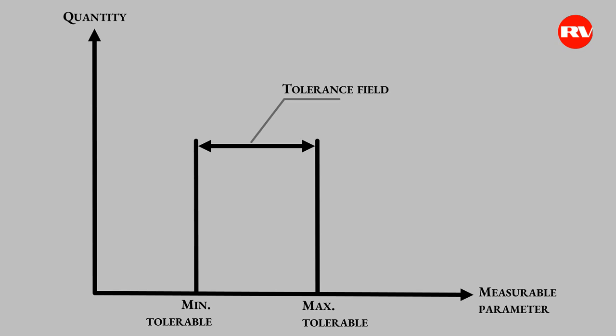Therefore, one must understand that quality is primarily characterized by the measurability of the parameter and the tolerance field — a certain interval between the minimum acceptable value and the maximum acceptable value. If in this interval you choose some more intervals, then you will get a certain sortedness. That which is close to the limits is the third sort; that which is in the center of the interval is the highest sort.